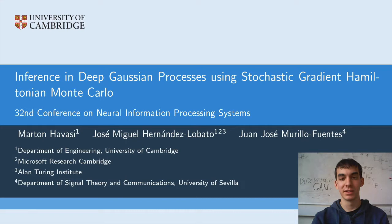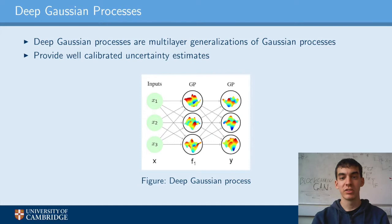Dear Fellow Scholars, this is Three Minute Papers with Martin Hawassi. Today, we'll be looking at a paper from myself, José Miguel Hernández Lobato, and Juan José Murillo Fuentes, called Inferencing Deep Gaussian Processes Using Stochastic Gradient Hamiltonian Monte Carlo.